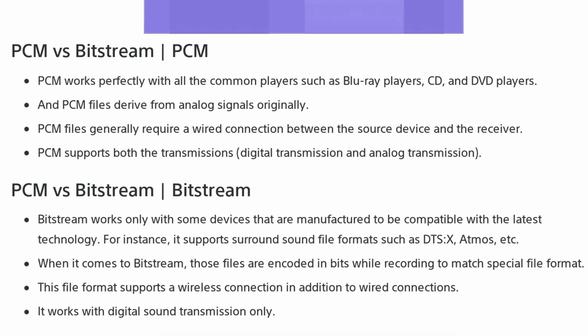One of the biggest benefits of Bitstream over PCM is that the file format supports a wireless connection in addition to wired connections. That means it can be sent over the air — for instance, over your aerial to your TV — and then decoded by your TV or your surround system, whereas PCM cannot. Bitstream also works with digital sound transmissions only, whereas PCM works with both digital and analog transmissions. Remember, analog is a wave; digital is block zeros and ones. The main difference in listening is that digital is more treble, whereas analog is more bassy.